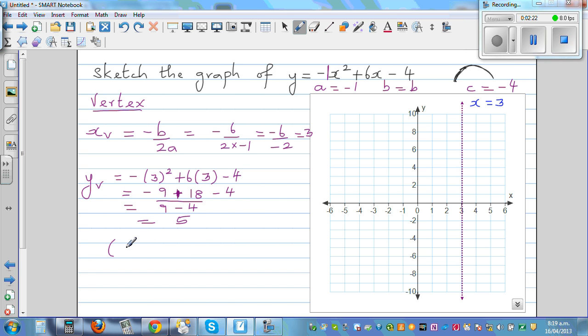So your vertex is 3 comma 5. So let's plot the point 3 comma 5. So 3 comma 5 is the vertex.